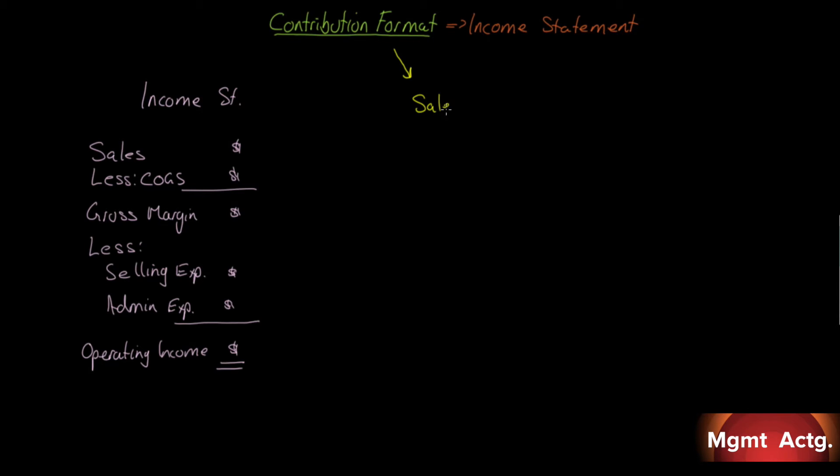So we're going to start with sales. All income statements start with sales. And then we're going to subtract just our variable costs. We may have variable costs of production, variable costs associated with selling. Maybe there's a commission on sales where every sale gets a certain percentage, and variable costs associated with administration. There might be some parts of administration that are variable.